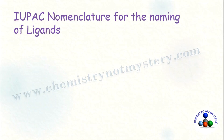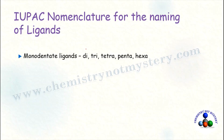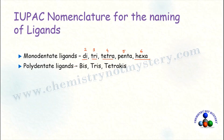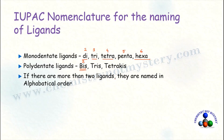Here are a few rules for the IUPAC naming of ligands. For monodentate ligands: if there are two ligands, 'di' is used as a prefix; for three, 'tri'; for four, 'tetra'; for five, 'penta'; and for six, 'hexa.' For polydentate ligands: if there are two ligands, 'bis' is used; for three, 'tris'; and for four, 'tetrakis.' If there are two or more ligands, they are named in alphabetical order.